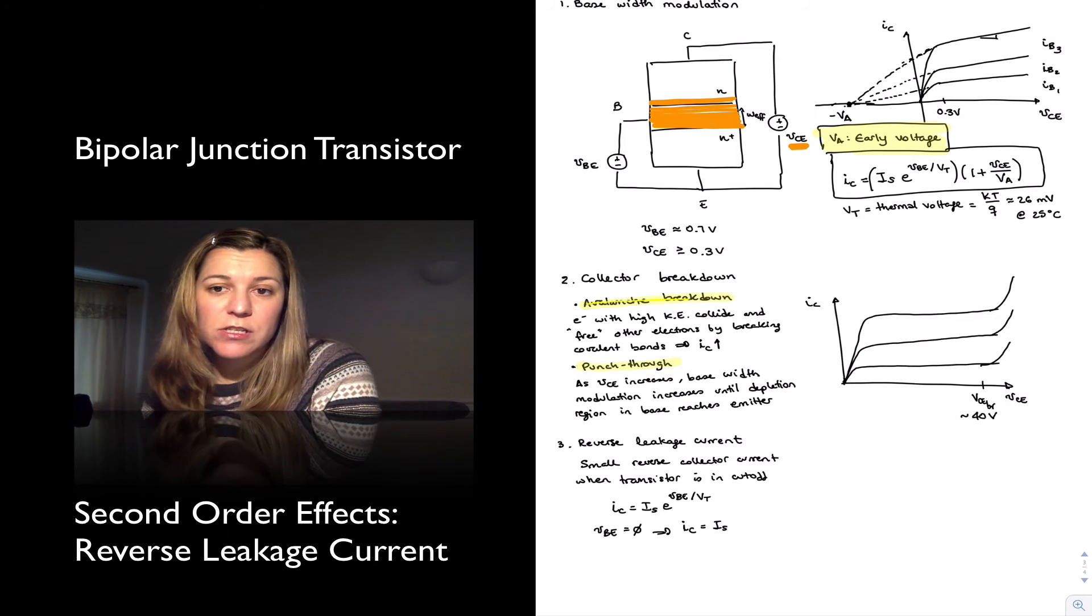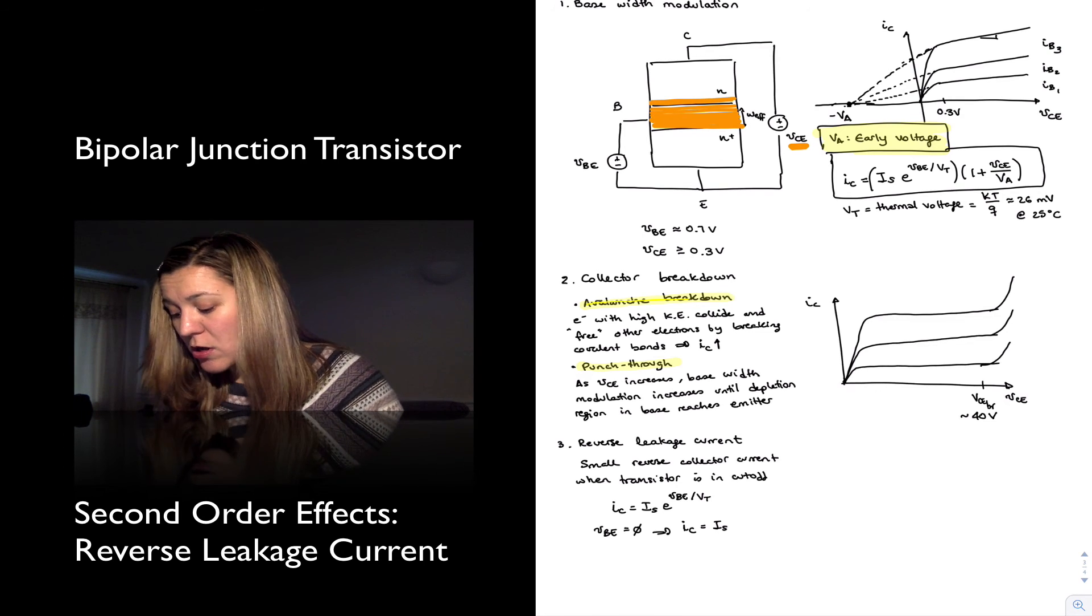For a typical NPN transistor, it's going to be in the order of nanoamps, so very small, but different from zero.